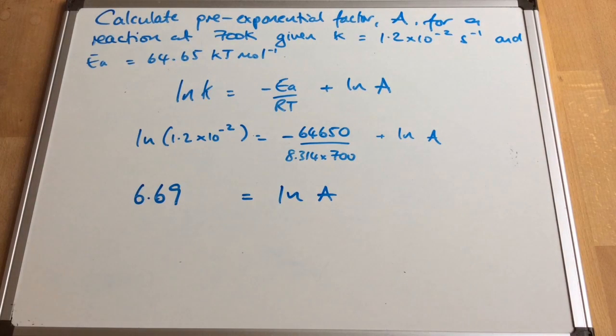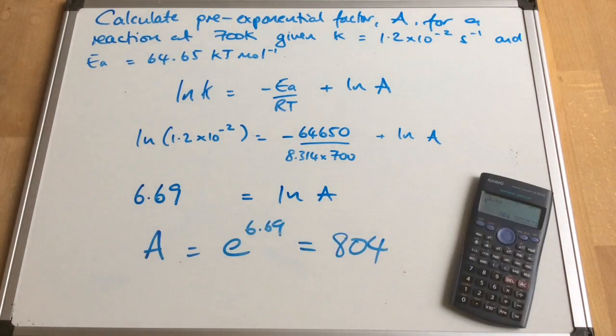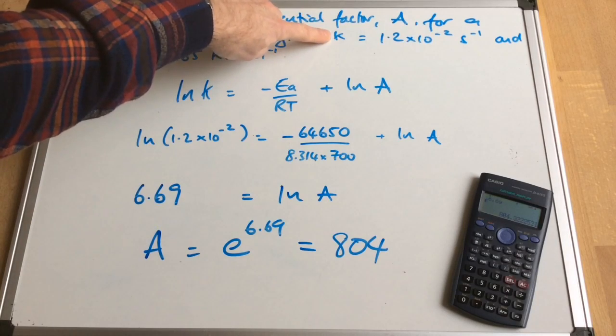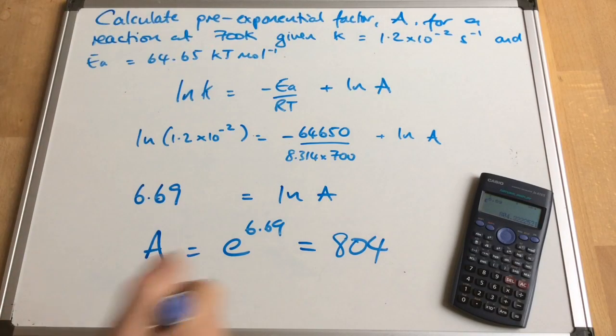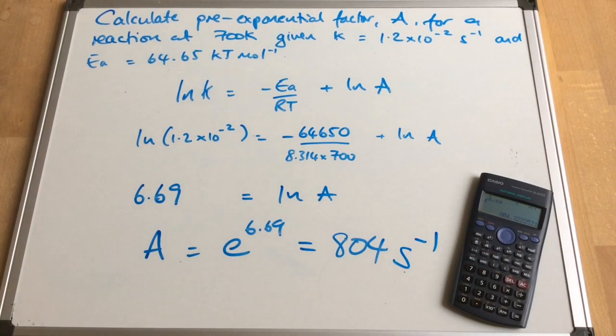So we need to do the inverse of ln, which is E to that number there. So that's giving me a numerical value for the pre-exponential factor A at 804. I haven't put the units in yet because I just want to make a point that the units of A are always the same as the units of k, the rate constant. And so the units for this A would be seconds to the minus 1 as well.